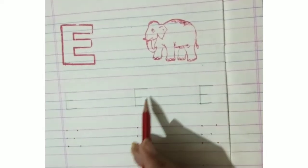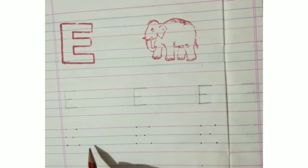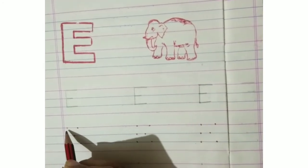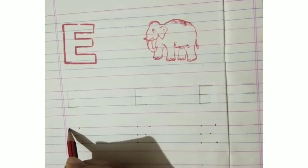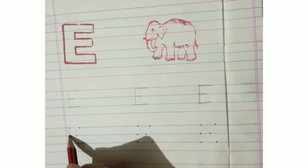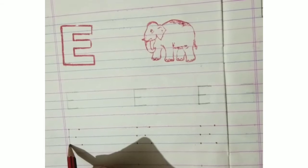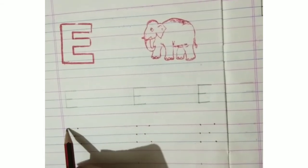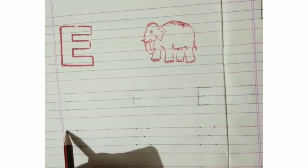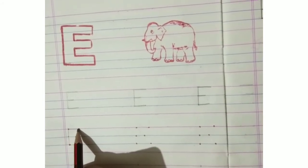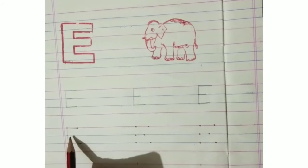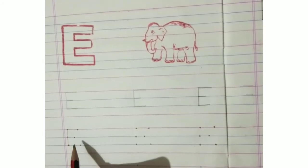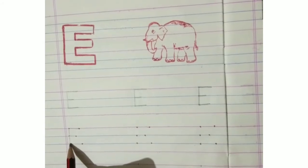Now we will write on dot to dot. First we make standing line, like this. Now sleeping line, again sleeping line, again sleeping line.